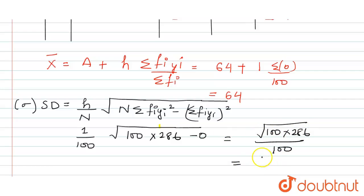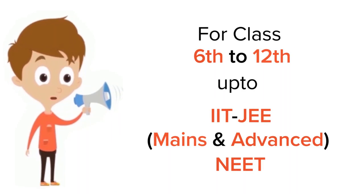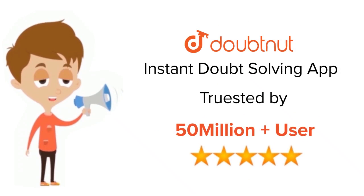So we have to just calculate the value of 100 into 286 square root divided by 100. So the value will be equals to 169.11 divided by 100. So the value of the standard deviation will be equals to 1.69. This is the answer.